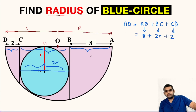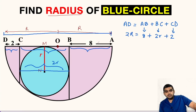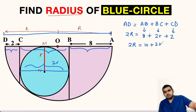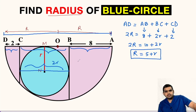CD is 2, and AD that means distance from A to D is twice capital R. So we get a relationship between capital R and small r: 2R = 8 + 2r + 2, which simplifies to R = 5 plus small r. This is the relationship between capital R and small r.